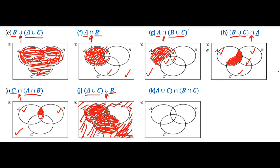I hope you understand all these shaded regions of a Venn diagram involving three sets. At the end I will show you the answers as well so you can compare your working with the answers.